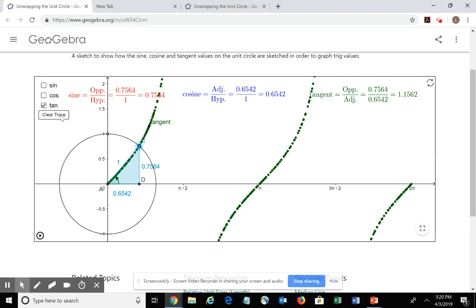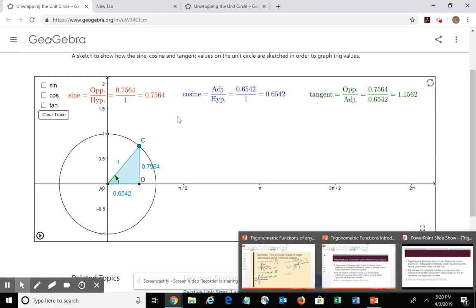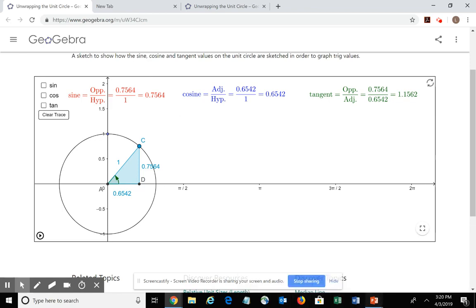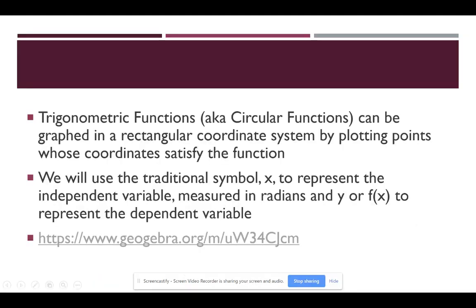So the idea that we're going to get into now is we're going to begin looking at the two-dimensional graphs of the six trigonometric functions that we have been discussing and we're going to look at them in two dimensions and how to create that picture within our rectangular coordinate system.